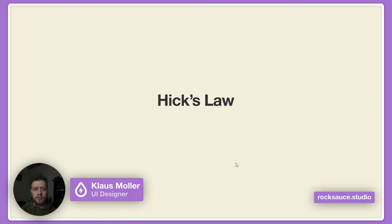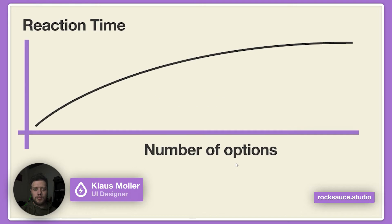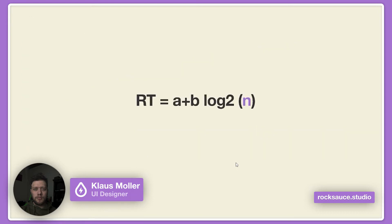In product design, we have Hick's Law. Hick's Law states that the reaction time is proportional to the number of options. Every option you add increases the time it takes for a person to react. There's a formula for this: reaction time equals a plus b log two of n, where n is the number of options you have.